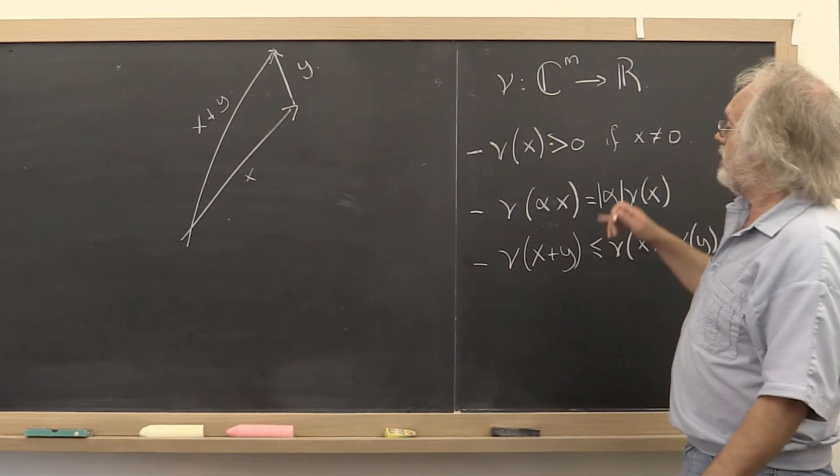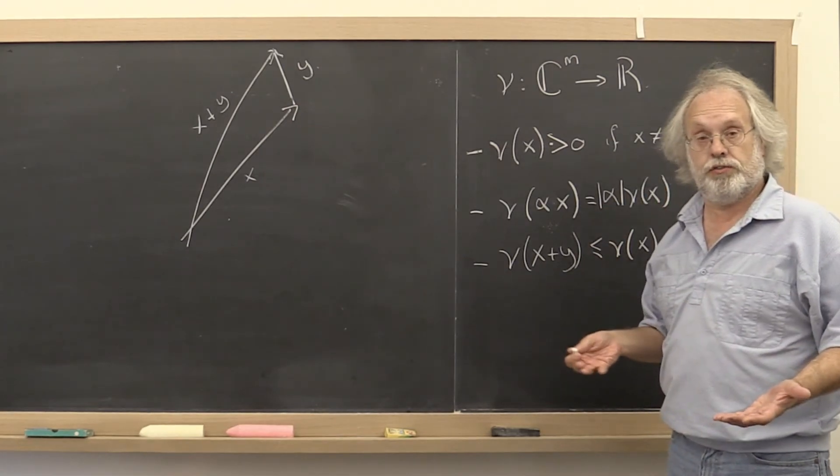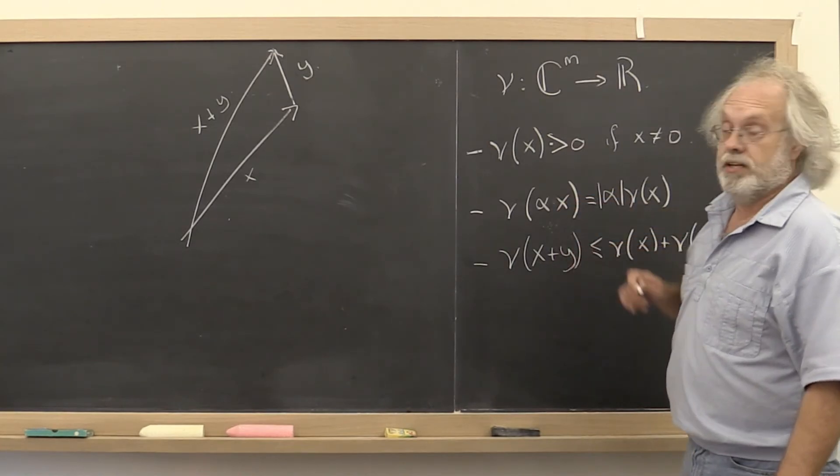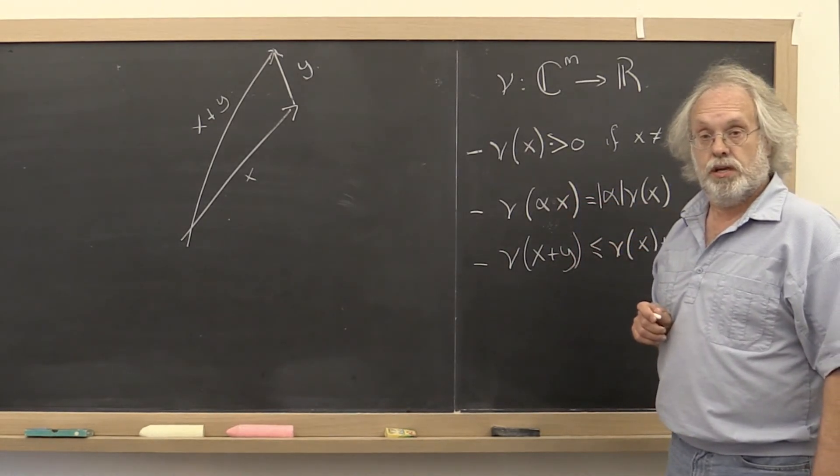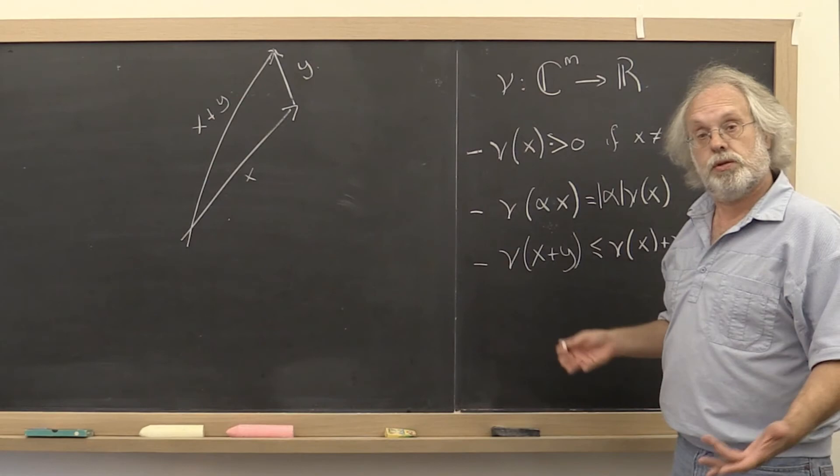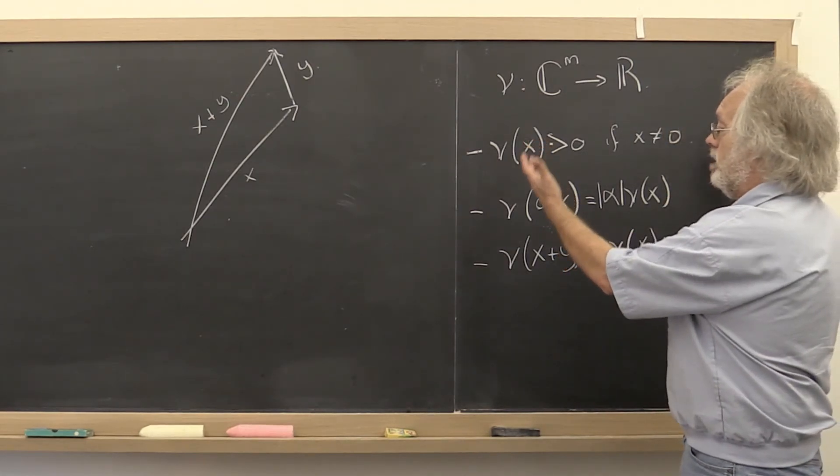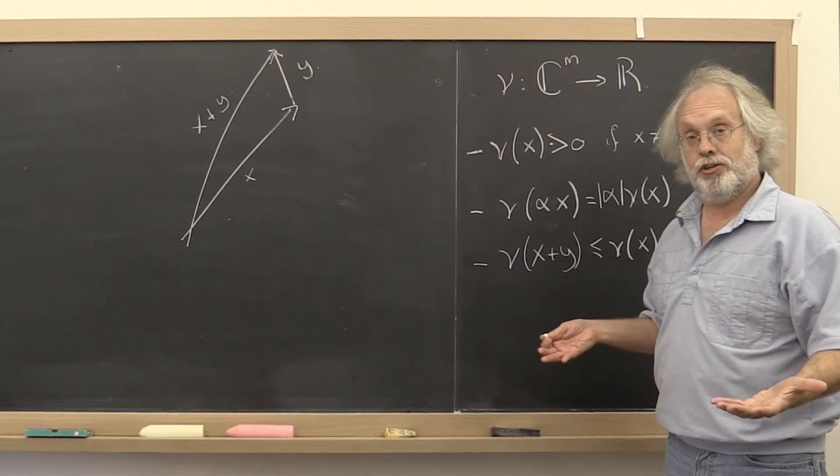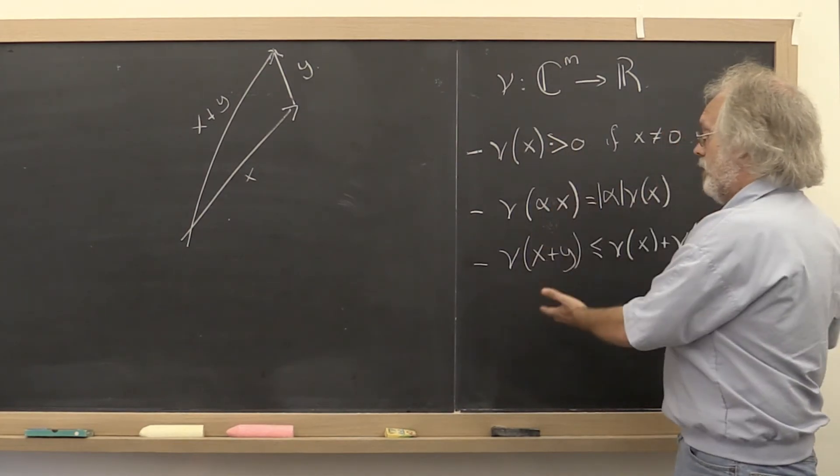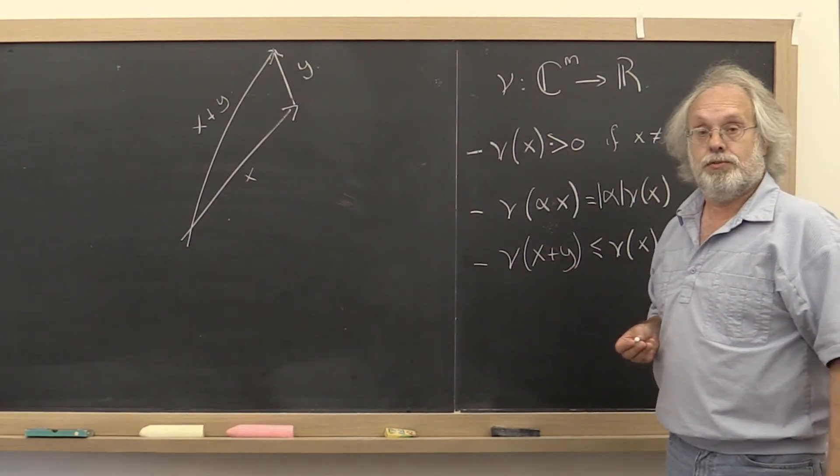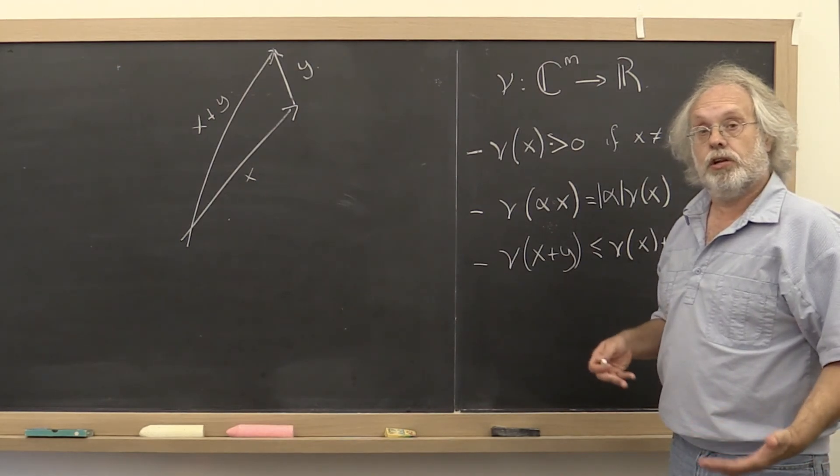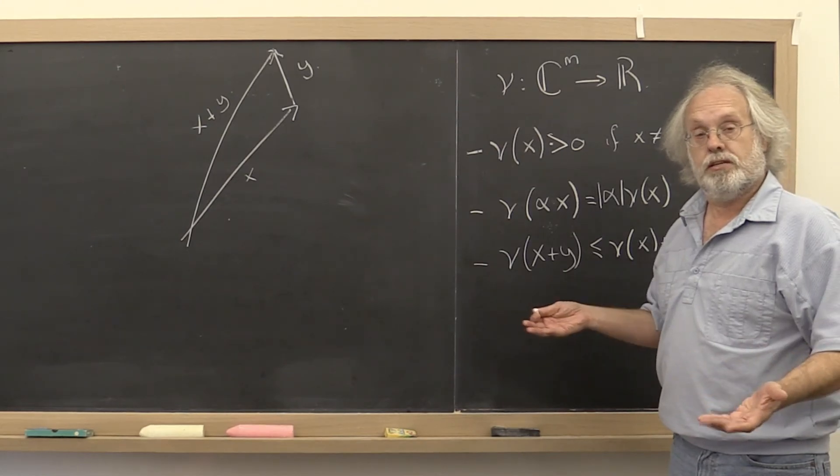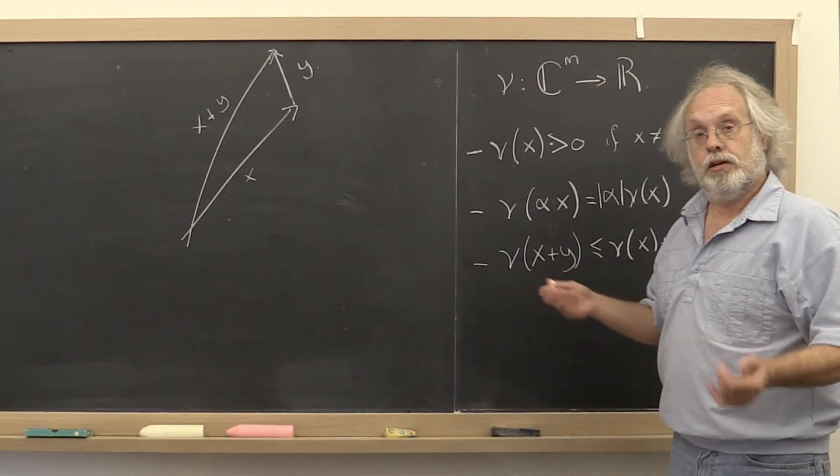So recall that our absolute value function for complex numbers also obeyed these three conditions, and it was also a norm. So now we have a family of functions. Any function that obeys these conditions right here is actually a norm, which is a function that we can use to measure the length of a vector.